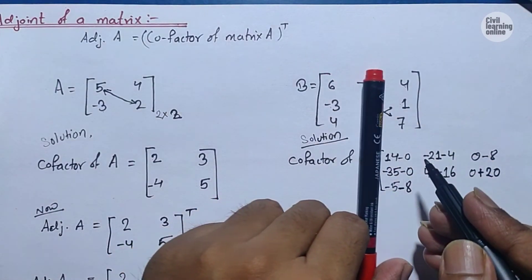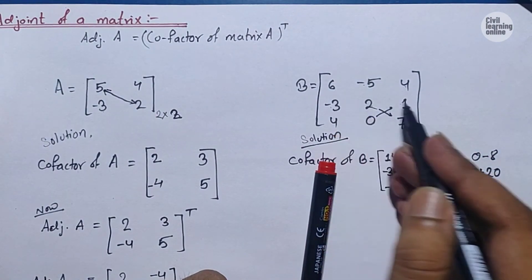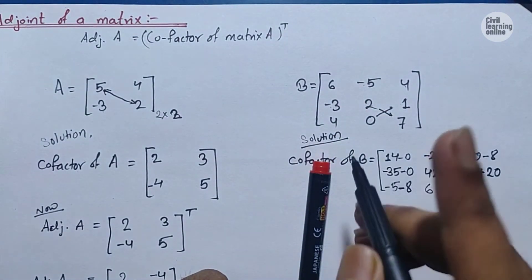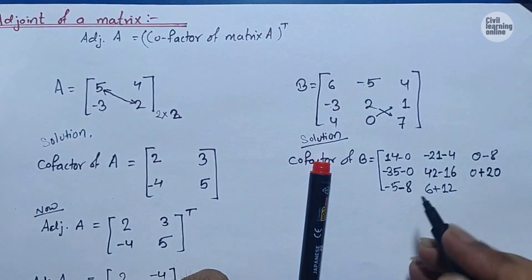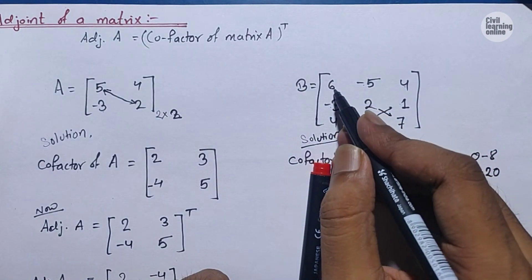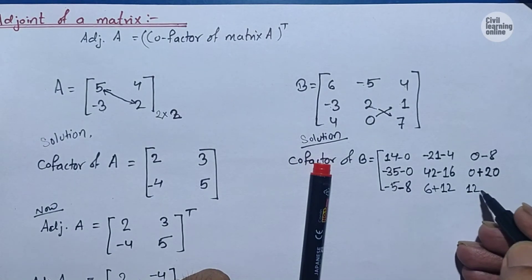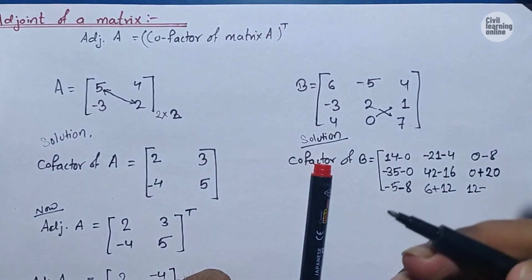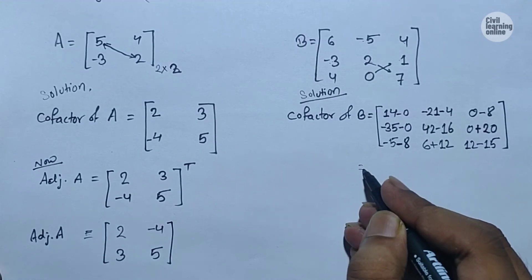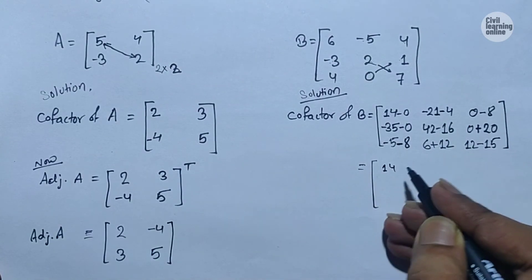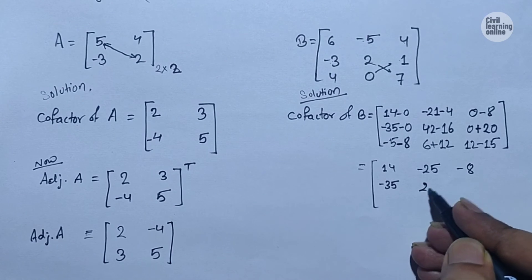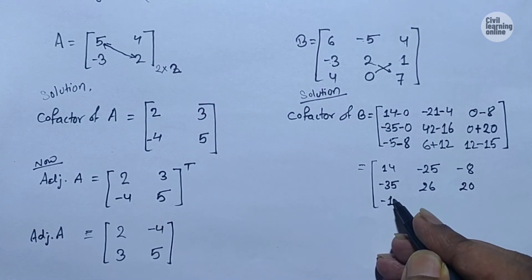For element 2 in the last row, the remaining elements are 6, -3, 4, 1. So 6 times 1 equals 6, and -3 times 4 equals -12 — moving upward changes the sign to give positive 12, so 6 - (-12) = 18. For element 7, the remaining elements are 6, -3, -5, 2. So 6 times 2 equals 12, and -3 times -5 equals positive 15, giving 12 minus 15 equals -3. Compiling the matrix, we have: 14, -25, -8 / -35, 26, 20 / -13, 18, -3.